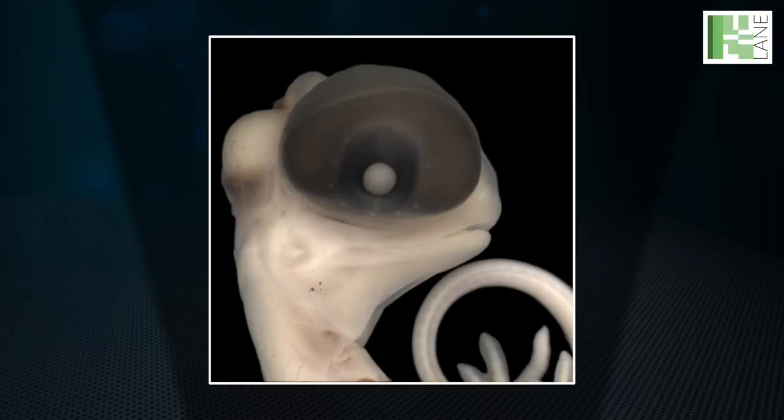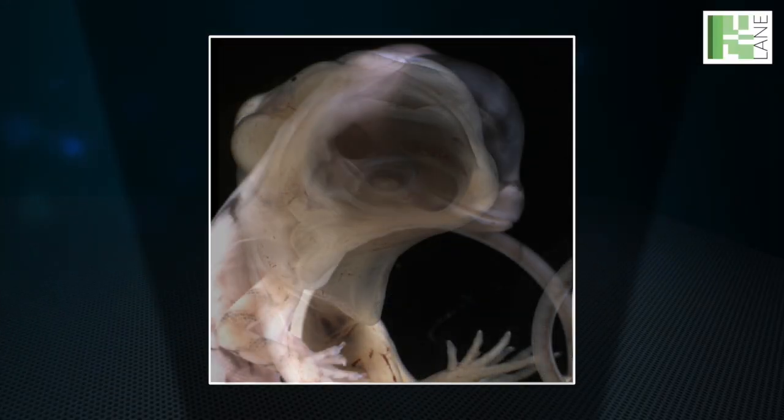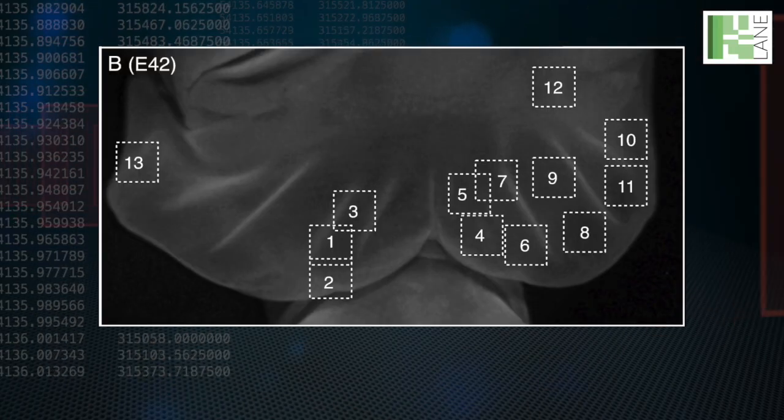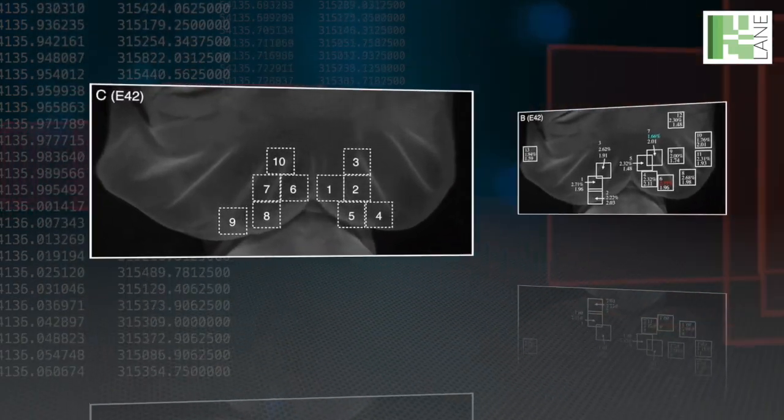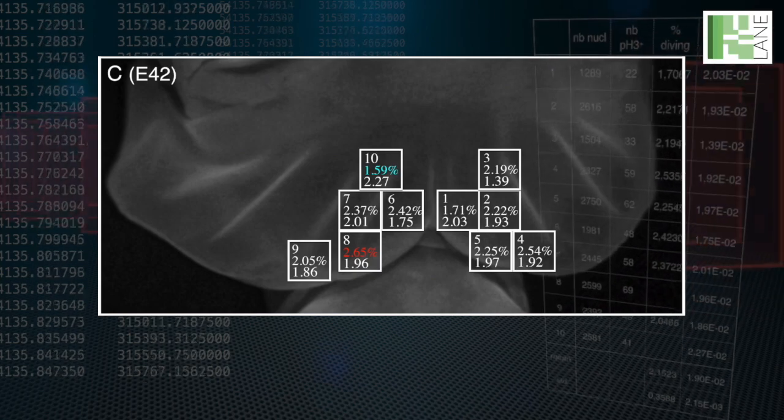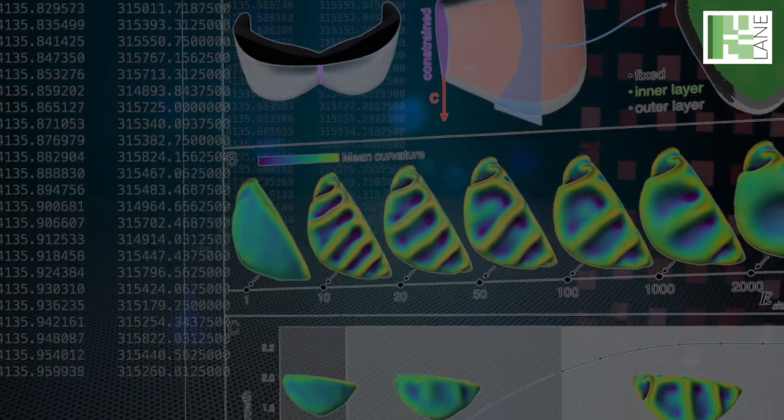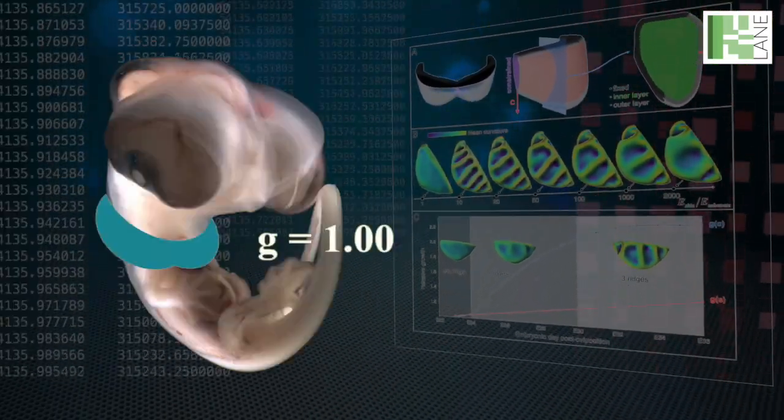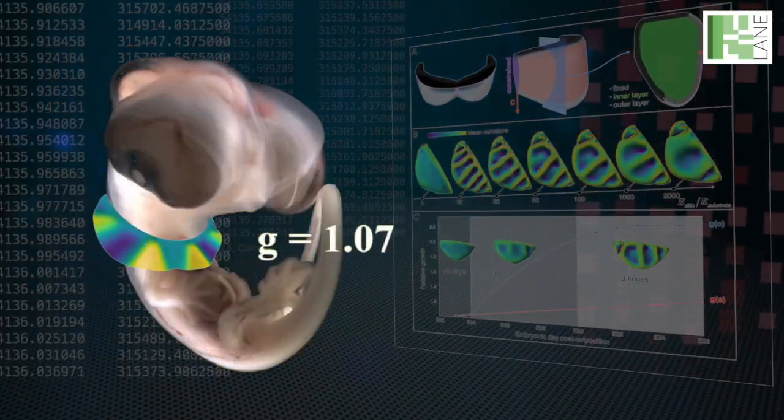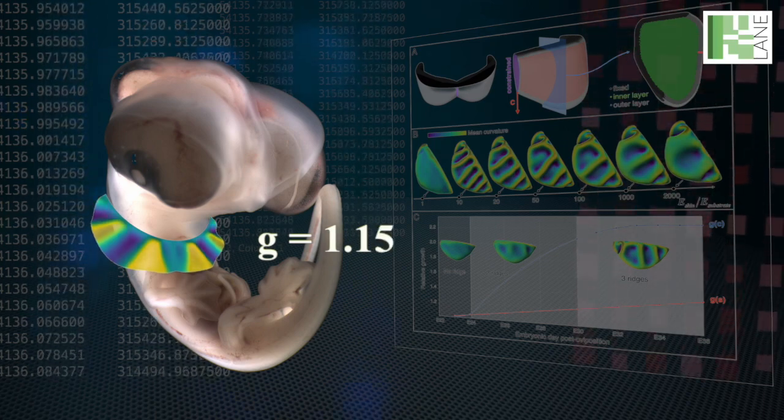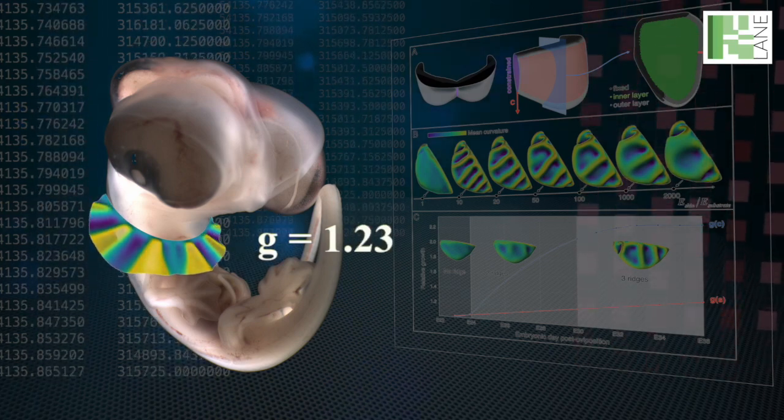As the frill develops, it folds, making up the ridges. Milinkovitch's team saw that the ridges in the dragon's frill do not emerge from increased growth at the folding sites, but from physical forces whereby the growth of the frill is constrained by its attachment to the neck. This causes the top layer to buckle, creating the folds.